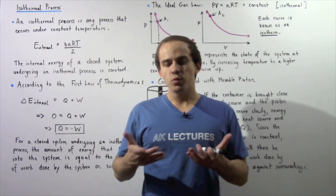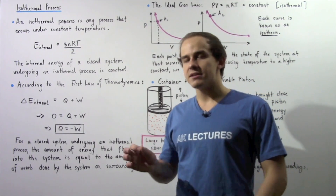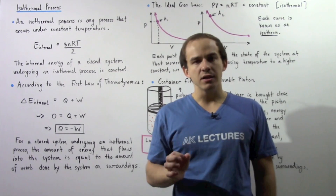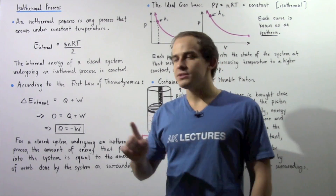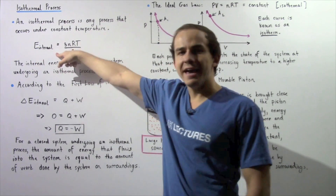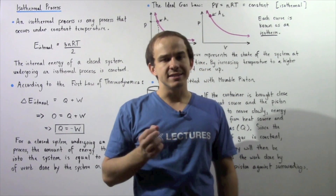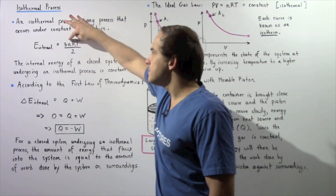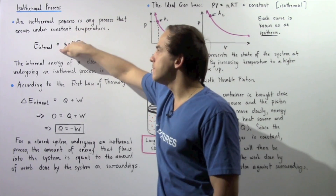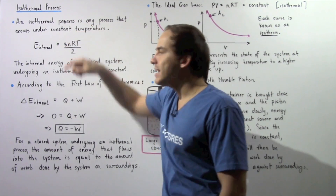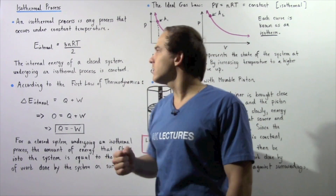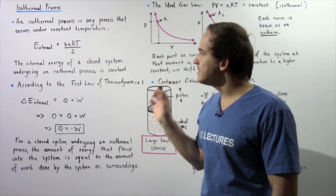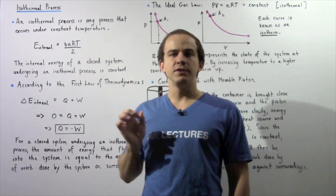Let's suppose we take a closed gaseous system composed of ideal monatomic gas molecules. The internal energy of our closed gaseous system is equal to 3nRT divided by 2, where n is the number of gas molecules, R is the universal gas constant, and T is the temperature given in Kelvin.